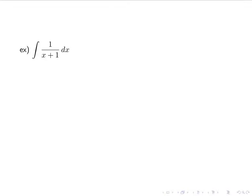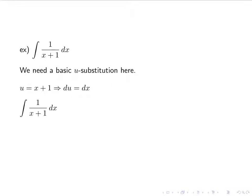So we're going to start with an example. We have the integral of 1 over (x+1) dx. This is going to be a nice, easy u-substitution. We let u be the denominator, so u equals x plus 1. When we differentiate, we get du equals dx. When we substitute, the integral of 1 over (x+1) dx becomes the integral of 1 over u du. When we integrate, we get ln of the absolute value of u plus c, and substituting back we get ln of the absolute value of (x+1) plus c.